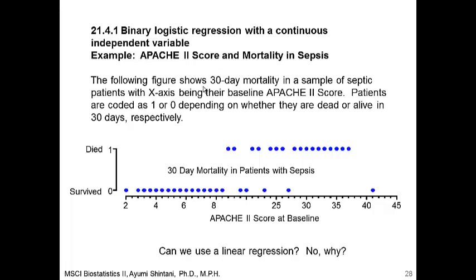The following figure shows 30-day mortality in a sample of septic patients, with the x-axis being their baseline Apache 2 score. Patients are coded as 1 or 0 depending on whether they are dead or alive in 30 days respectively. These patients are survivors and these patients are deceased.